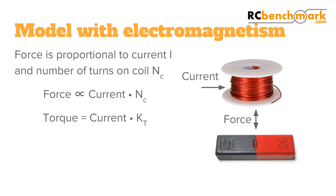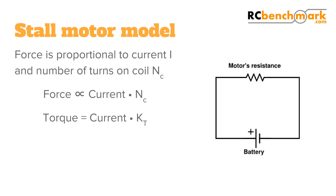Obviously, the motor is not just a resistor. The second important concept is electromagnetism. The current in the coil generates a force. The force is proportional to the current and the number of turns in the coil. A logical conclusion is that to get more torque out of your motor, you just need more turns in your coils. This is true, but there are two problems. The first one is resistance — the more turns you have, the longer your wire is, and the more resistance there is in your wire. If you increase the resistance, there is less current going through the coil, and you lose efficiency.